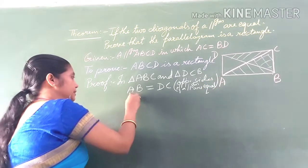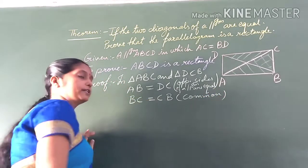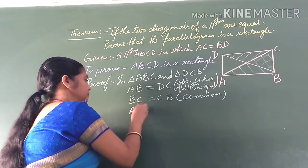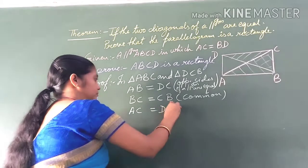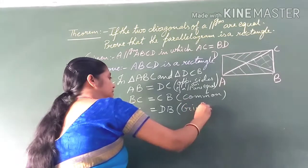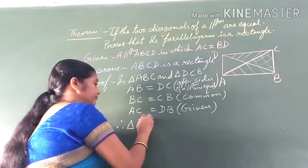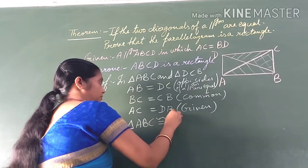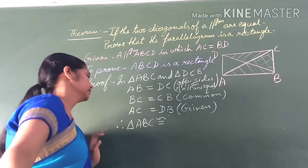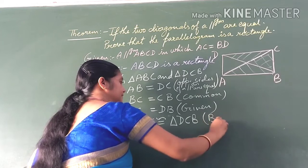The next one: BC is equal to CB — this is common. BC is common in both of the triangles. The next part which is equal: AC is equal to DB. AC is equal to DB — look at here, AC and DB are equal. This is given. Therefore, both the triangles are congruent by SSS congruency. Triangle ABC is congruent to triangle BCD by SSS congruency.